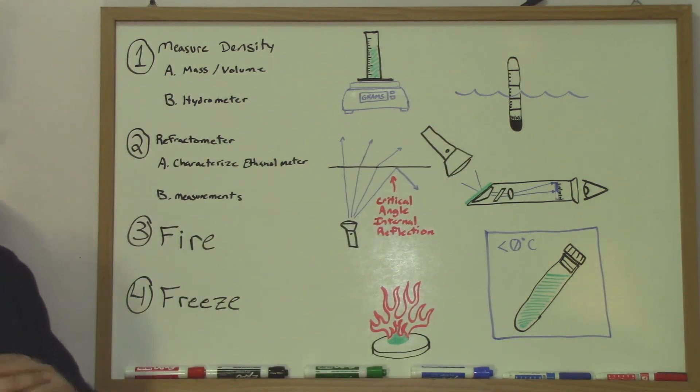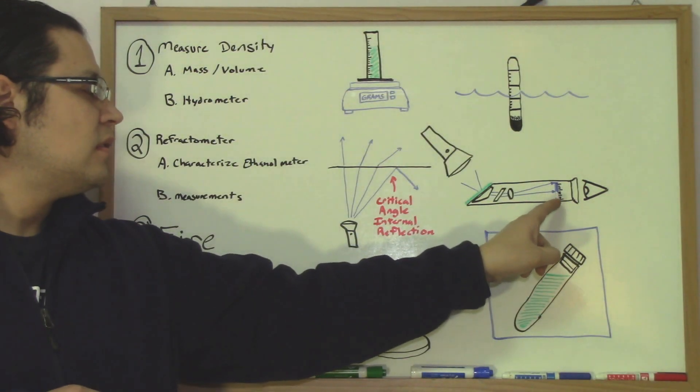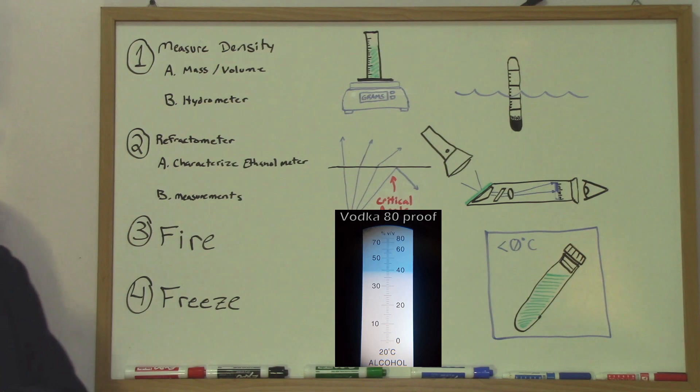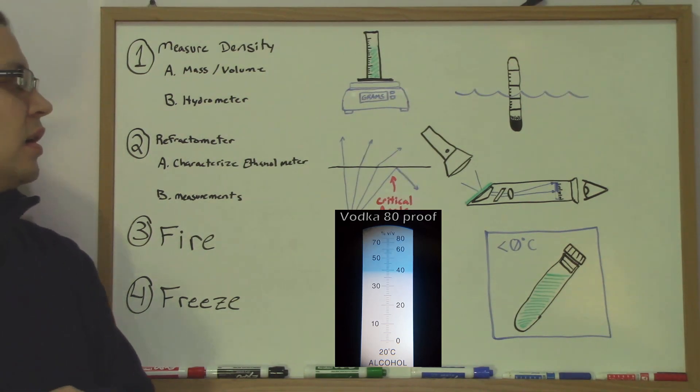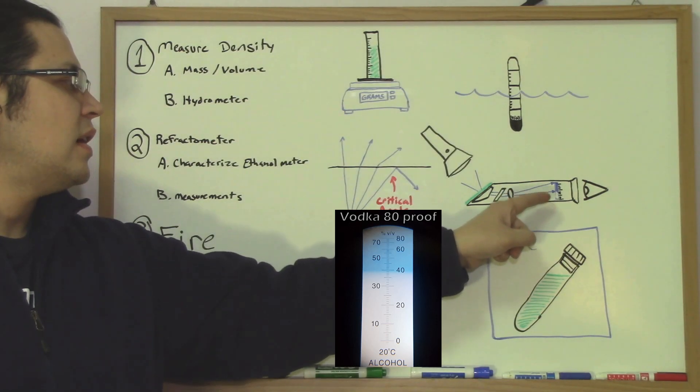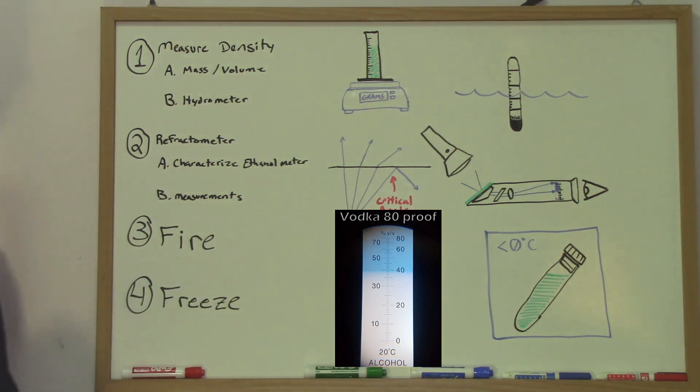You can kind of see there's less blue down here and more of that shadow up there. It's using this critical angle that's controlling where that bottom arrow would be and how much of that scale is filled.